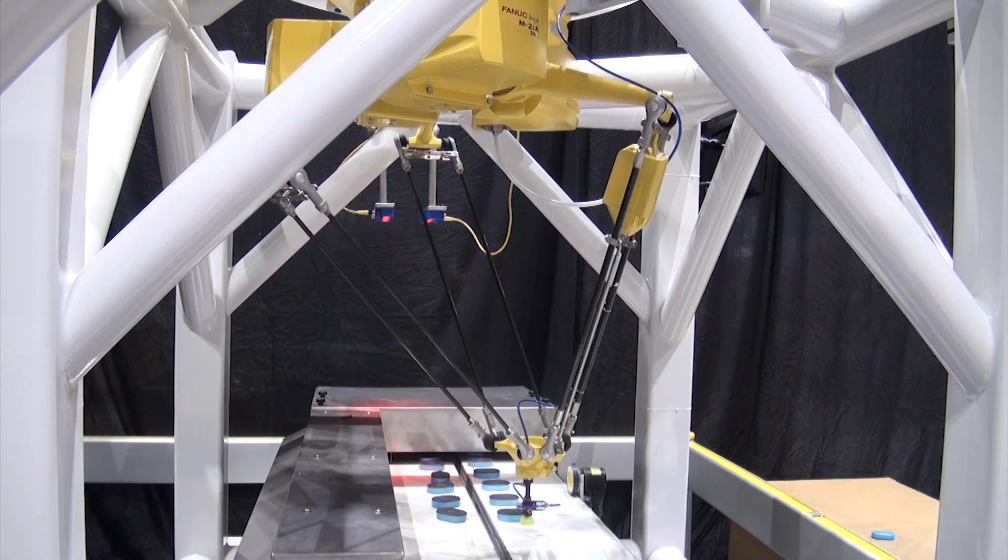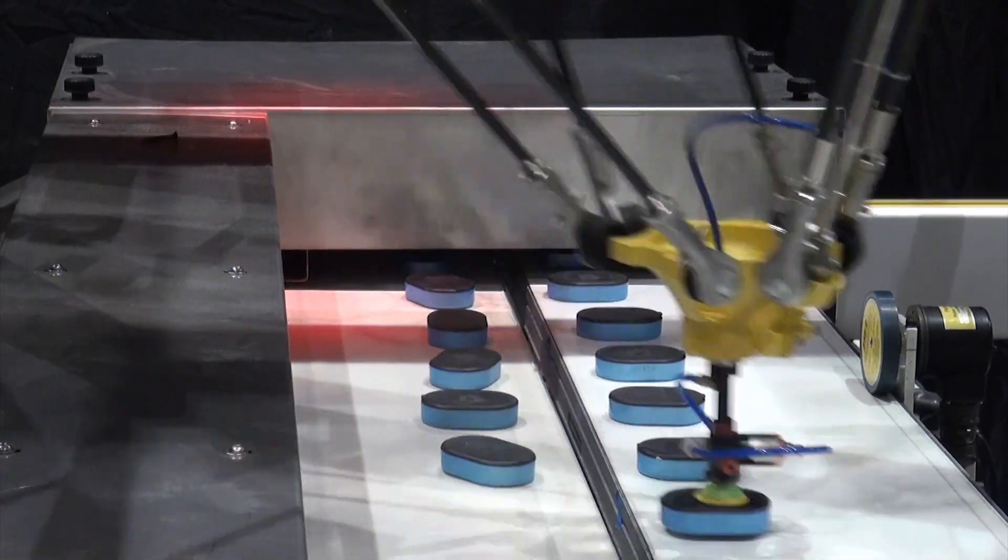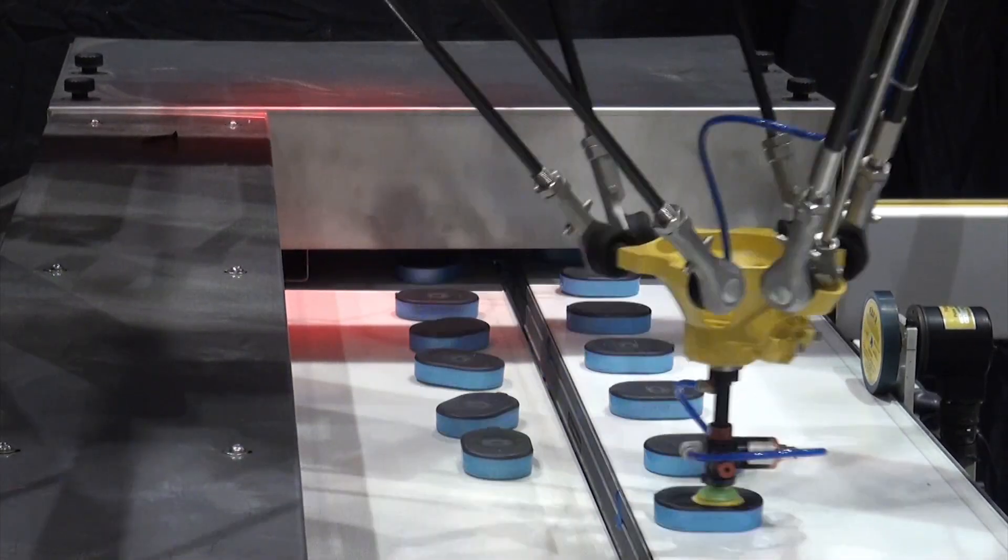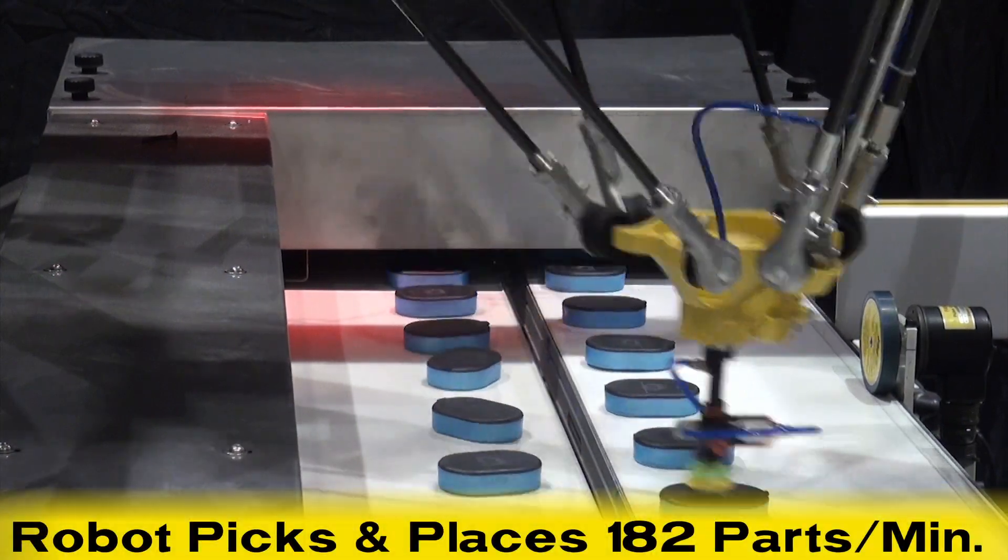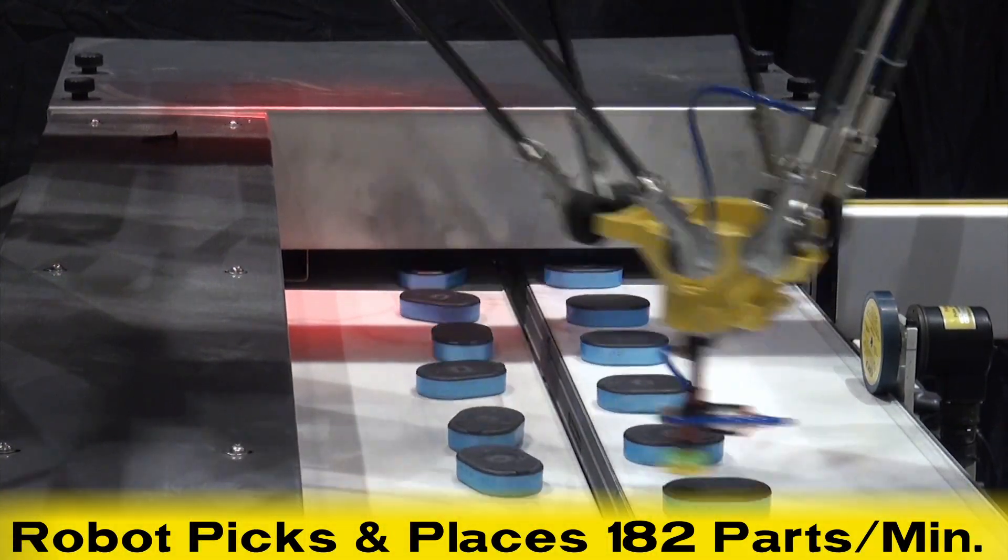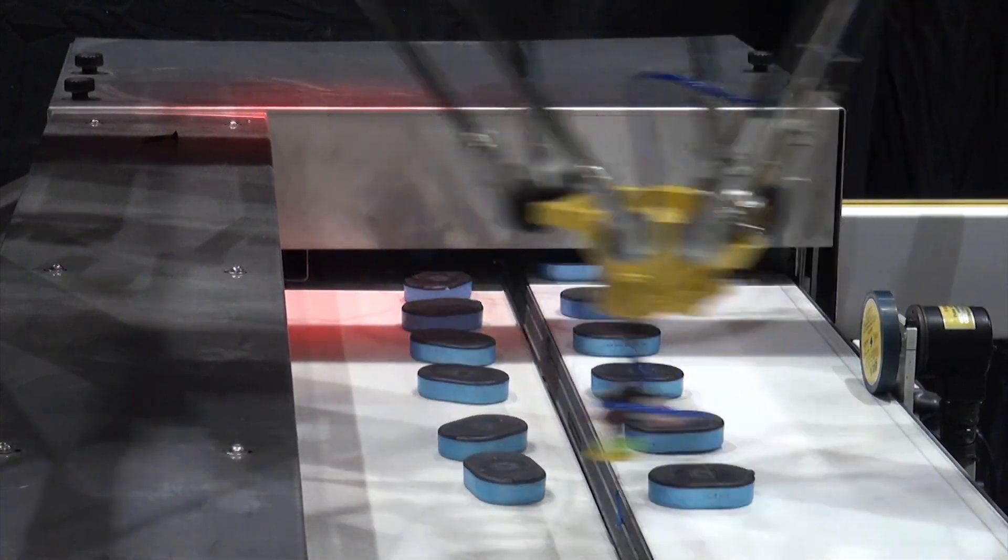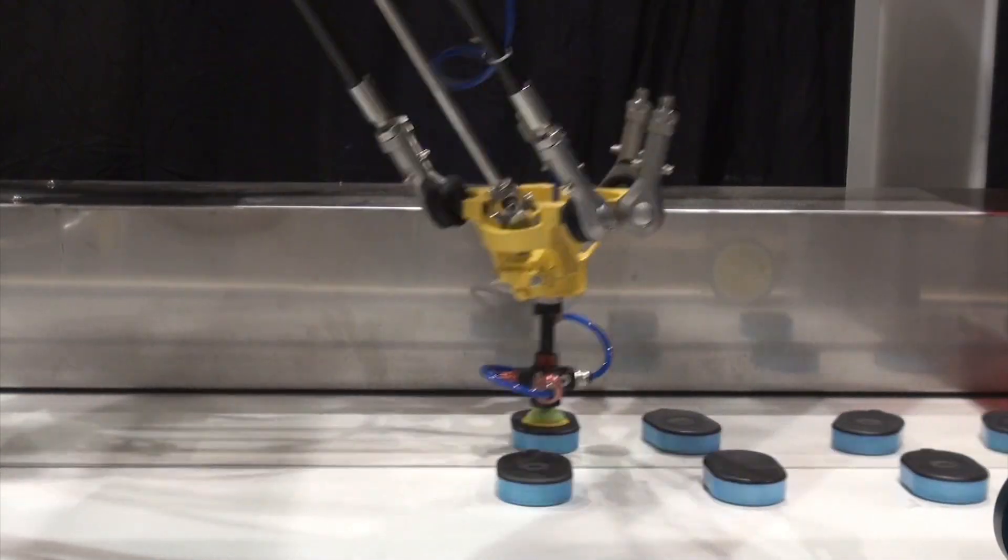In this demonstration, the M2IA picks and places mint containers from an inbound conveyor to an outbound conveyor at an amazing 182 parts per minute. That's approximately 3 parts every second.